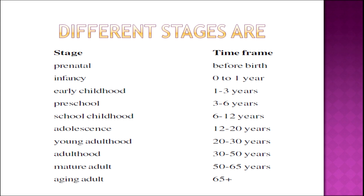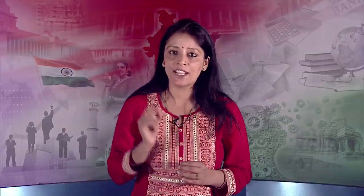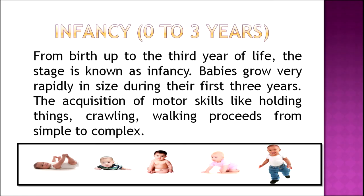Let us understand these stages in detail. The first developmental stage is the prenatal period — the period before birth when the child is inside the mother's womb. The second stage is infancy, ranging from zero to three years. Babies grow very rapidly in size during these first three years and also acquire certain motor skills. For example, they start learning how to crawl, how to walk, and they proceed from very simple to complex phenomena.